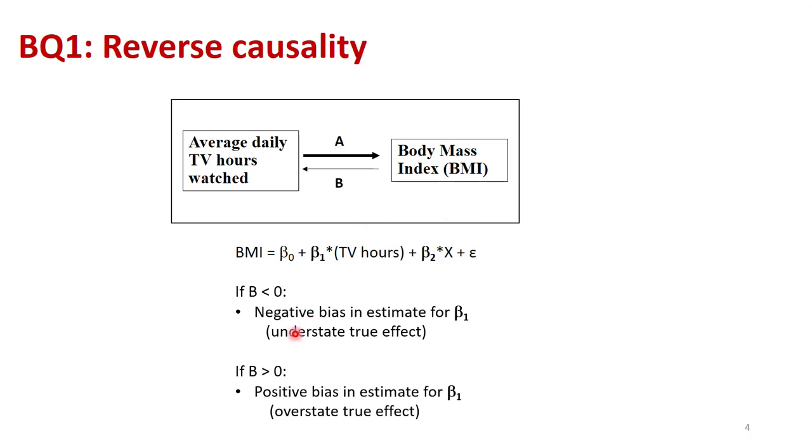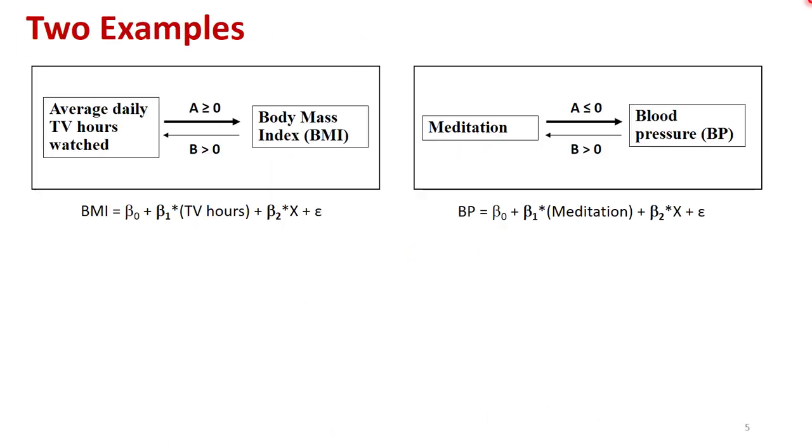Now in contrast, if B is greater than zero, that means that higher body mass index leads to more TV watching. This could be a lethargy argument. That means that this positive value of B is going to contribute positively to why the two variables move together. So it's going to cause a positive bias in your estimated effect or the estimate for beta one. So you're overstating the true effect.